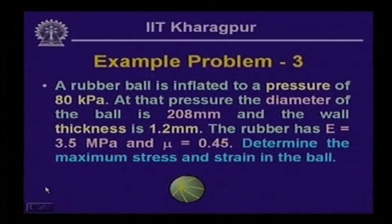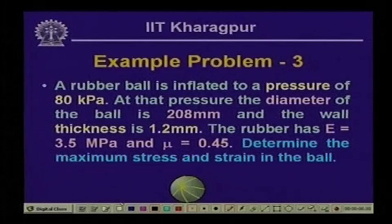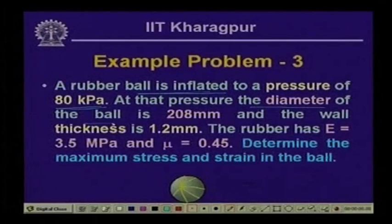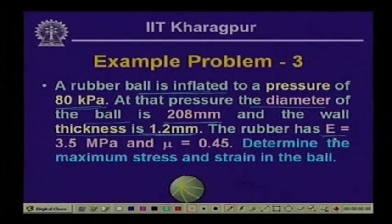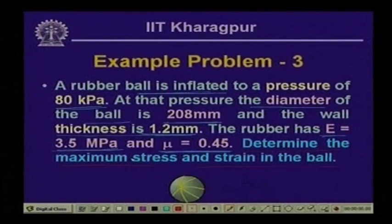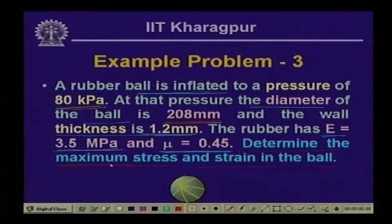Now let us look at a problem for a spherical vessel. A rubber ball is inflated to a pressure of 80 kPa. At that pressure, the diameter of the ball is 208 mm and the wall thickness is 1.2 mm. The rubber has modulus of elasticity E = 3.5 MPa and Poisson's ratio μ = 0.45. We must determine the maximum stress and strain.